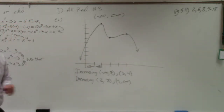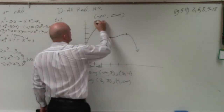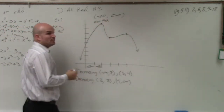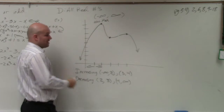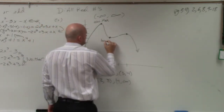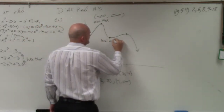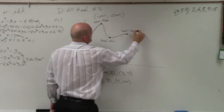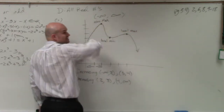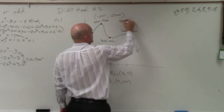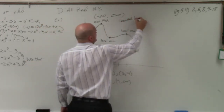I want you guys to understand that this is the absolute max. There is no absolute minimum because the graph goes infinitely down. So we call this a local min and this a local max. Since you can't go higher than the absolute max, we call this bounded below.